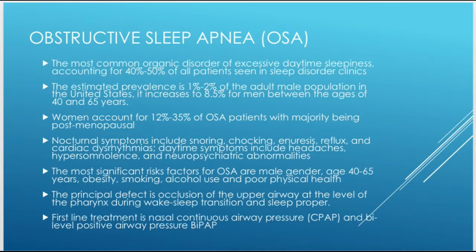The estimated prevalence is approximately 1 to 2% of the adult male population in the United States, increasing to 8.5% of men between ages 40 and 65 as they tend to gain more weight. Women account for 12 to 35% of OSA patients, the majority being post-menopausal.